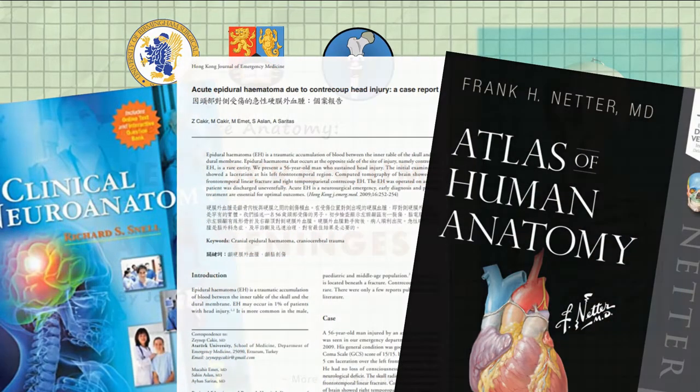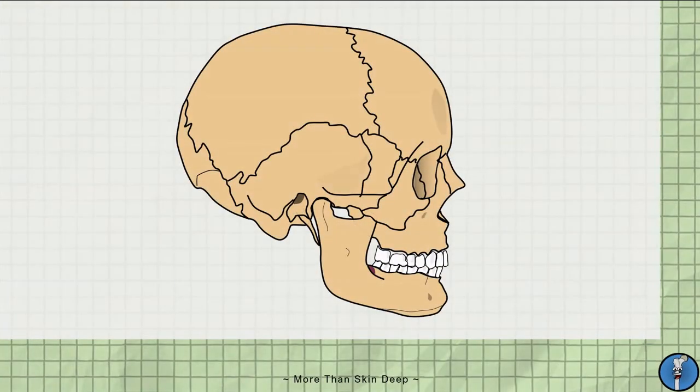Firstly, here is a lateral to medial view of the side of the skull from the right side. We will be covering the part of the skull which encapsulates the brain, known as the neurocranium.